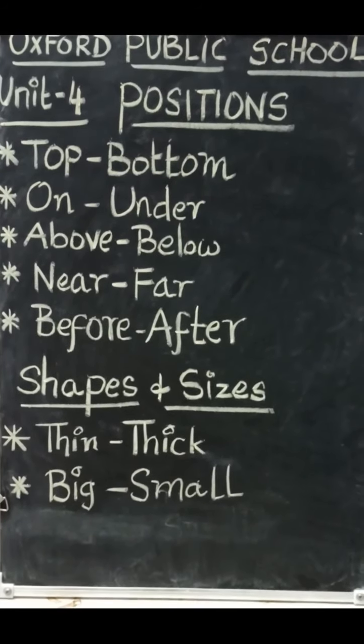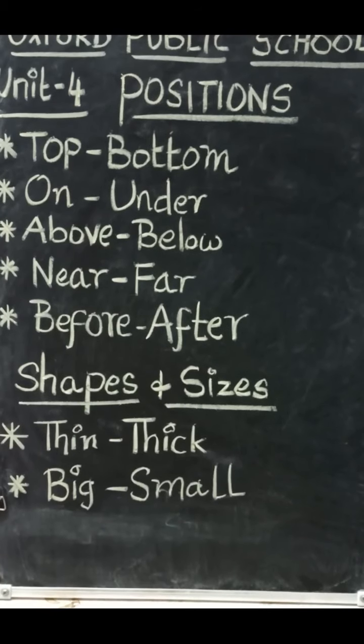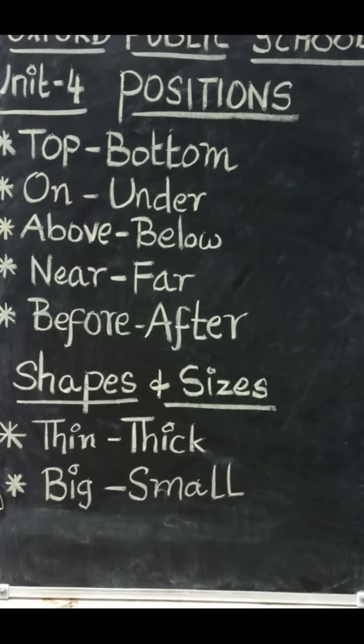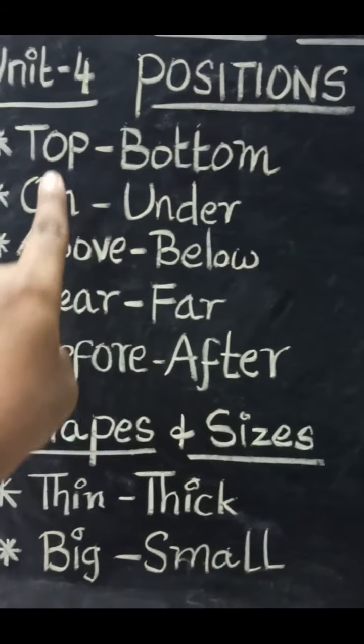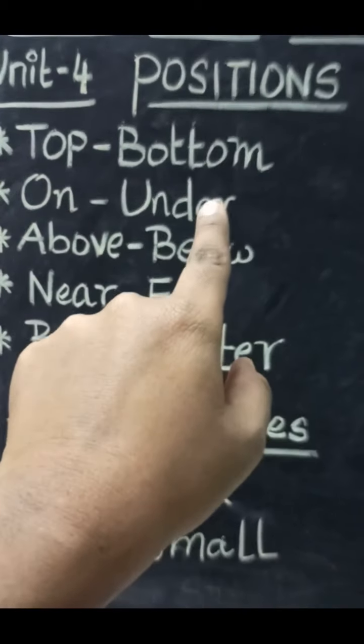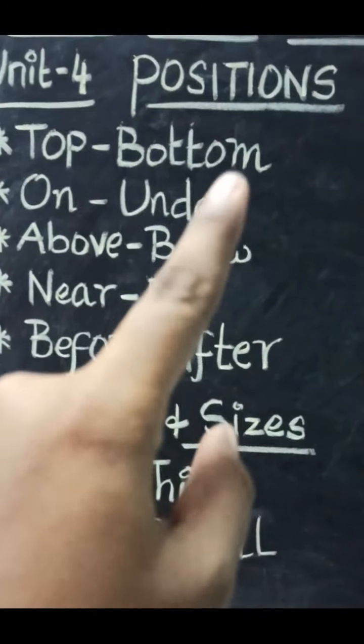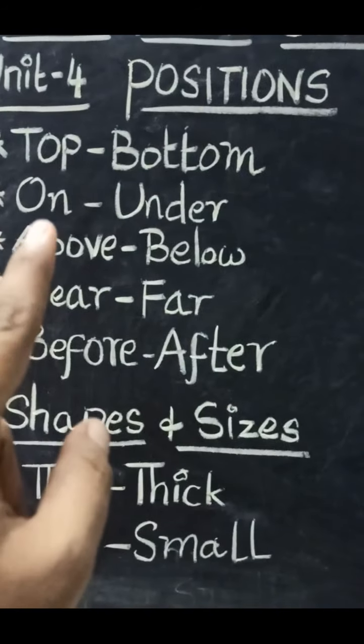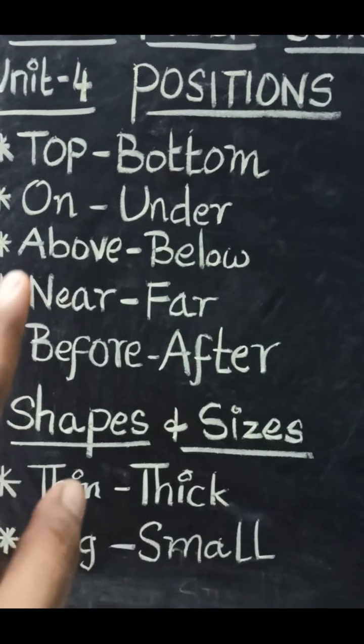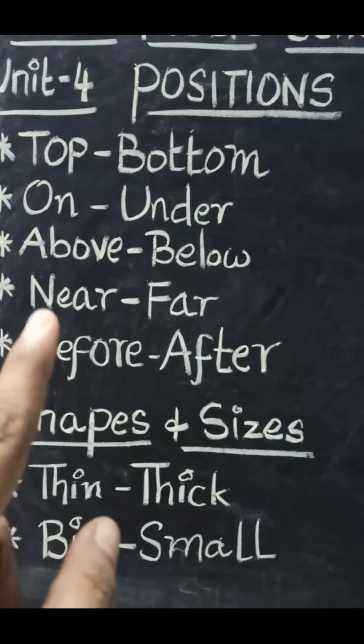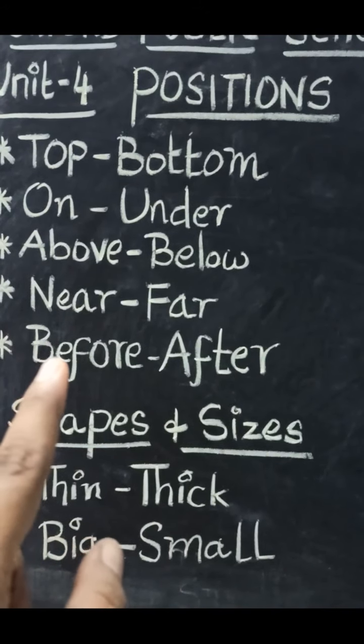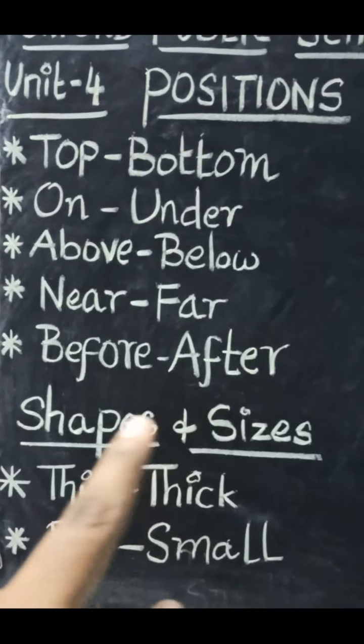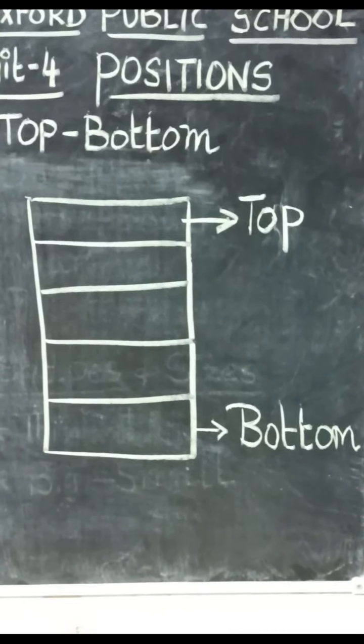Are you able to see the board clearly? I have written positions, shapes, and sizes. The first one is top-bottom. Top is the position and the opposite of top is bottom. On-under, above-below, near-far, before-after. These are the positions we are going to learn. Let us learn about the first position.